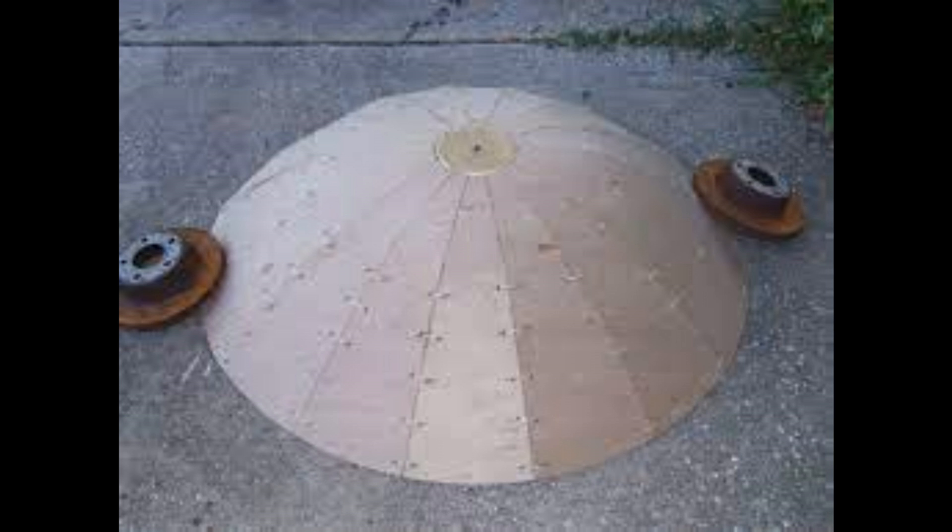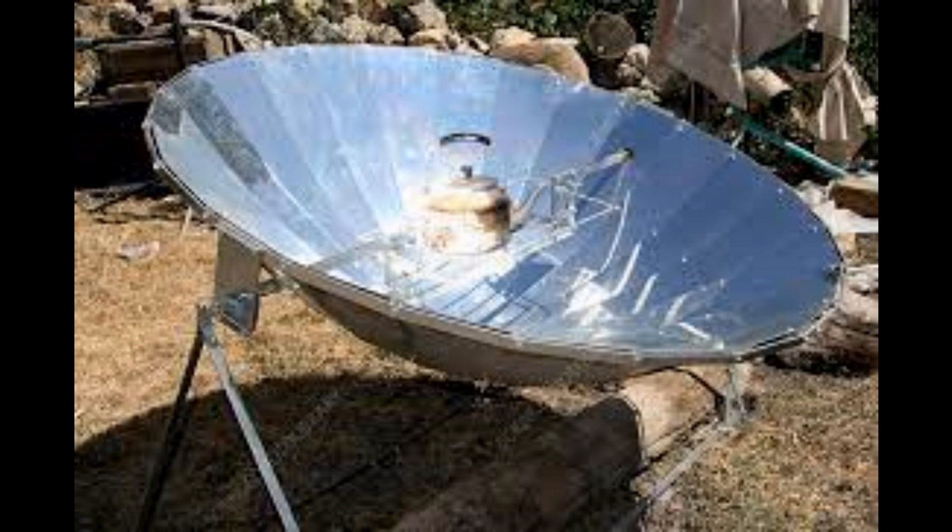The other one is to start with the flat sheet that's circular, cut some sections in it and fold it up. That will make an approximation to a parabola and you see people using that method as well and some of the cheaper solar cookers are made that way.